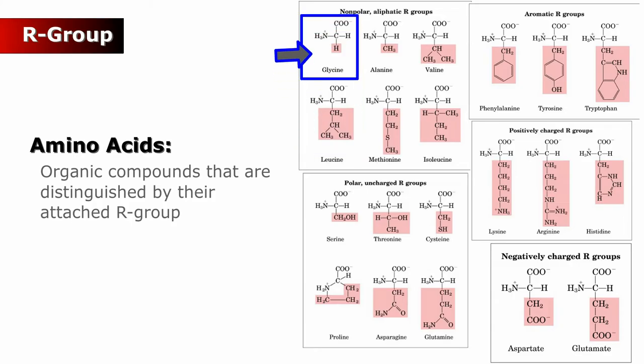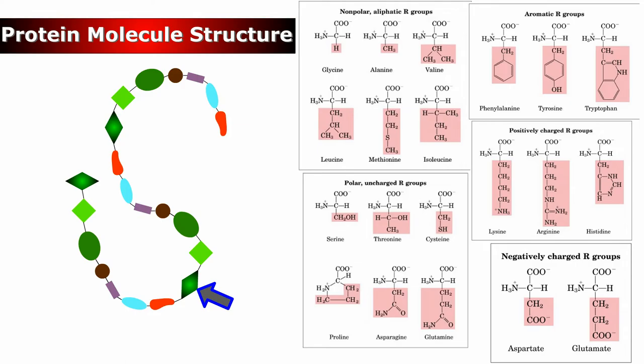The simplest one, glycine, has only one hydrogen molecule in its R group. Some of the more complex ones, such as arginine and histidine, have larger compounds in this position. The sequence of amino acids determines the protein molecule's primary structure.